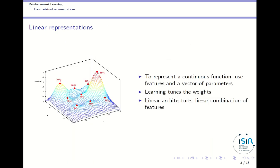What we can do is use a parameterized representation. We can use a set of features like Gaussian functions — represented here in three dimensions. We have nine Gaussian functions and associate one single weight to each. With just these nine weights, I can represent any function that appears as a linear combination of those Gaussians multiplied by the weights.